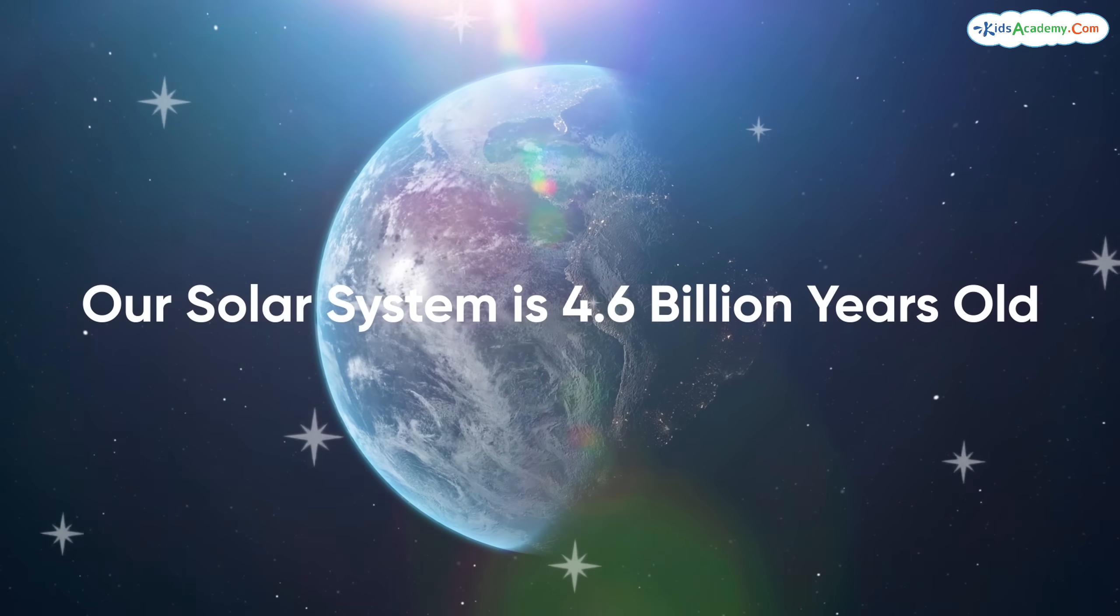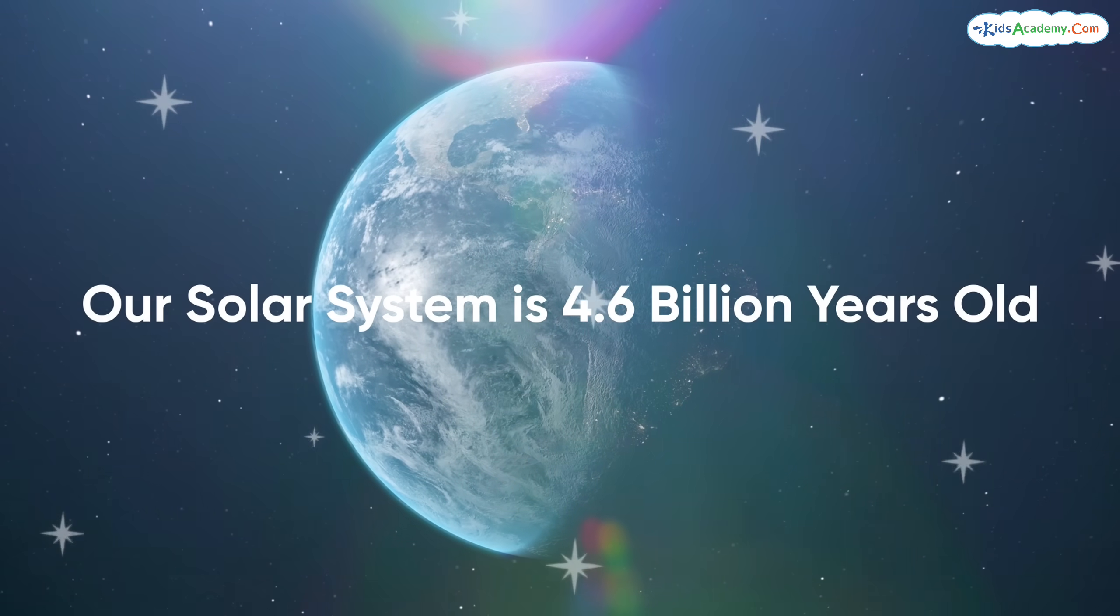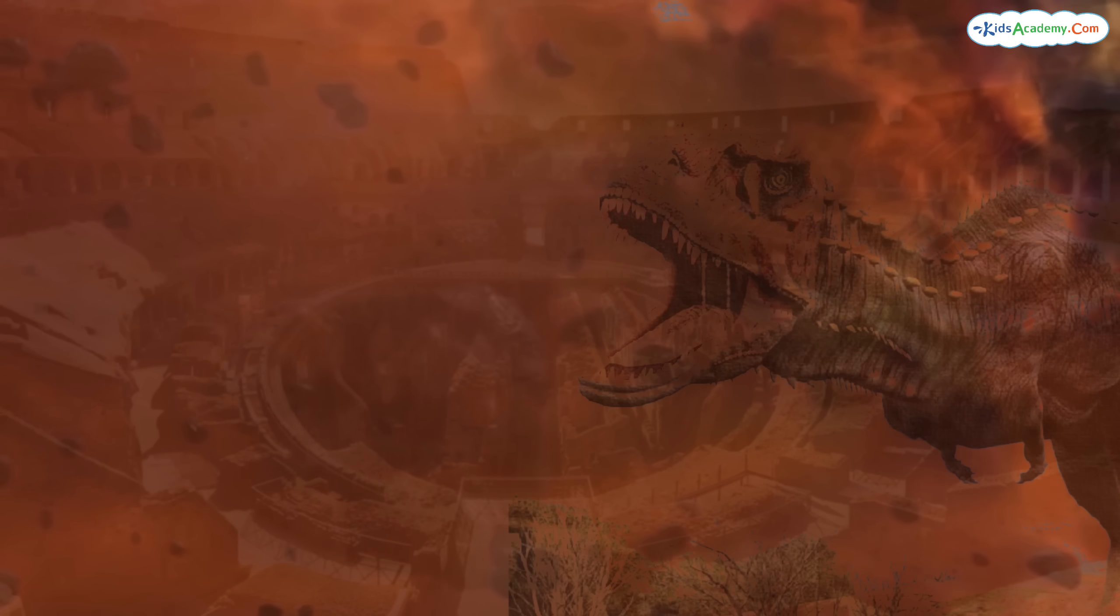So, how old is our solar system? Well, scientists estimate that it's about 4.6 billion years old. That's older than dinosaurs, older than ancient civilizations, older than pretty much everything on Earth.